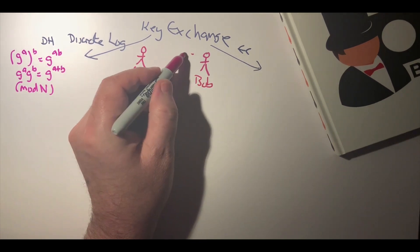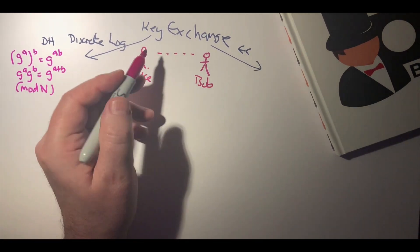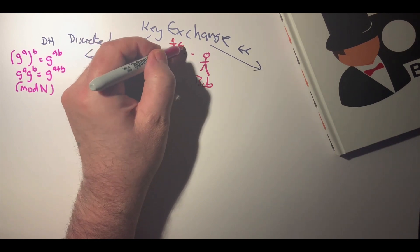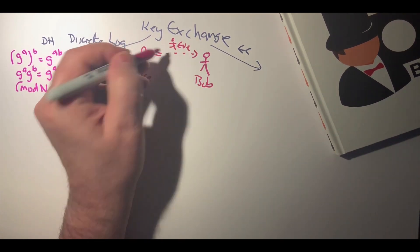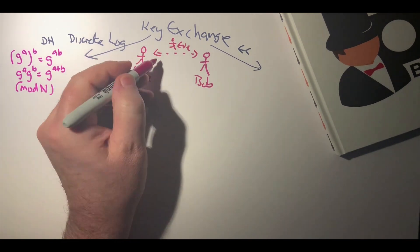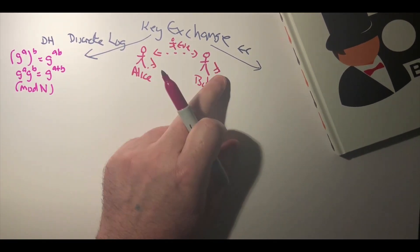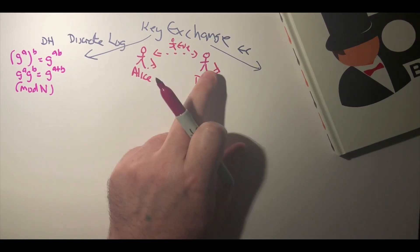How can they communicate openly even though Eve might be listening and exchange values, then end up with the same secret? Normally the secret is a session encryption key.